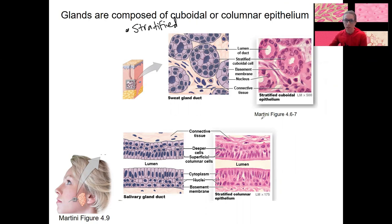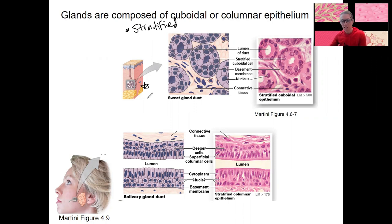These two examples here are the only examples of stratified cuboidal and stratified columnar epithelium. Here is one example of stratified cuboidal: the sweat glands, which we'll look at again next week with the integumentary system and the skin. An example of stratified columnar is the salivary glands, with the same components — apical and basal surfaces, all that.